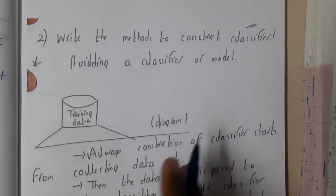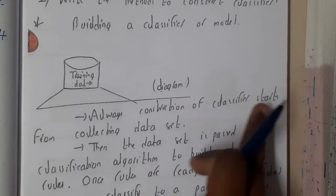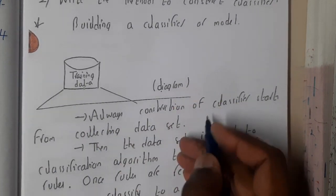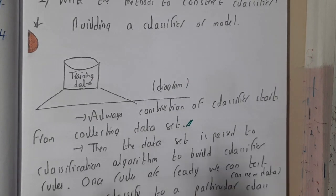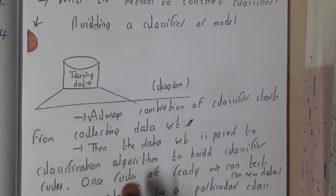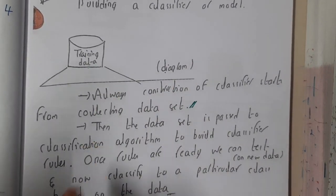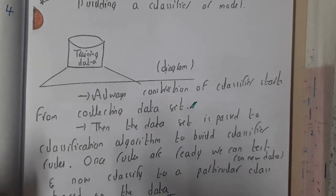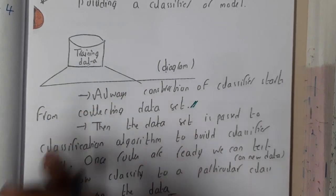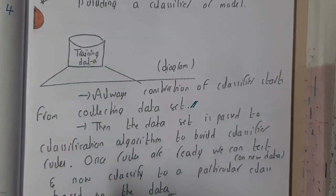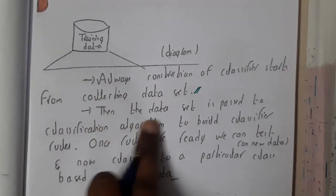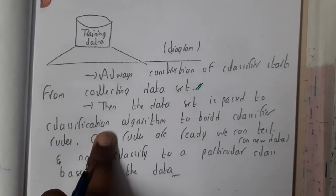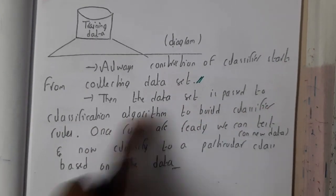Construction of a classifier starts from collecting a data set. Based on that data set, it will analyze, classify, and create an algorithm and create some rules. Based on those rules on new inputs, it will apply and give you the output. The data set is passed to the classification algorithm to build classifier rules.